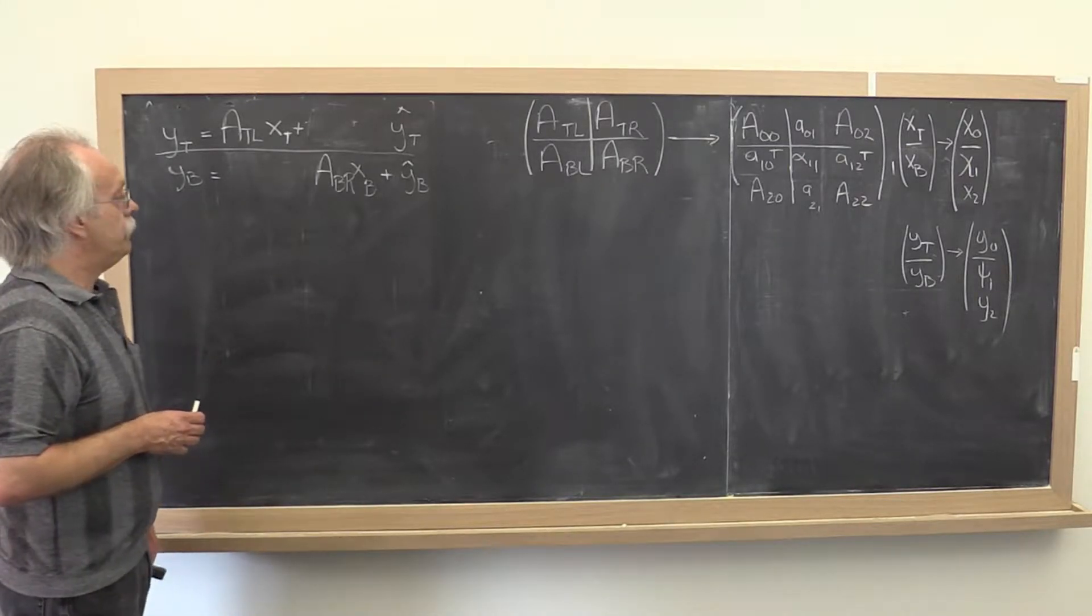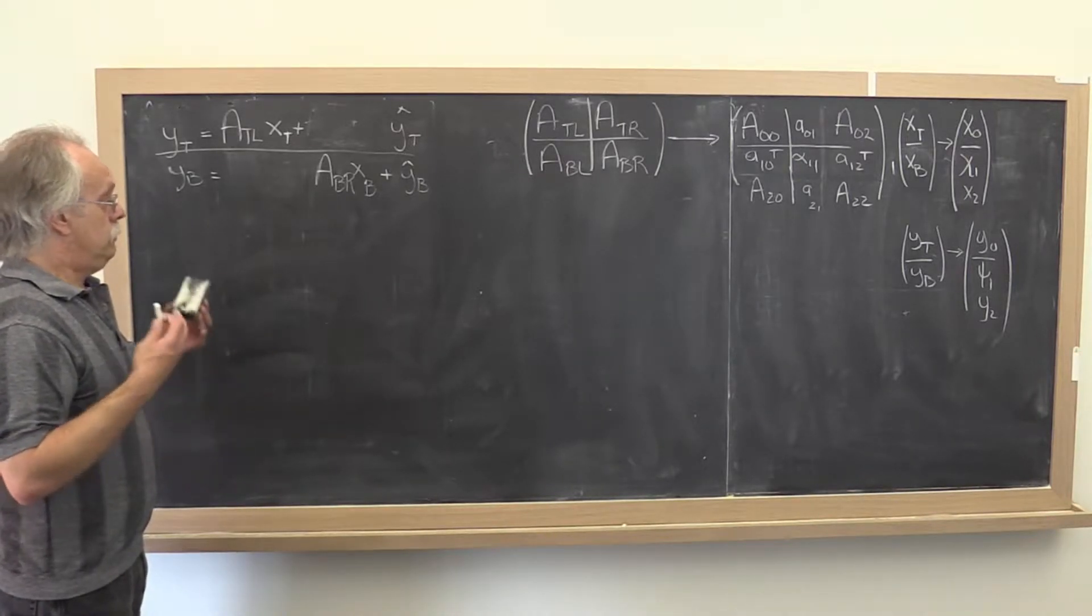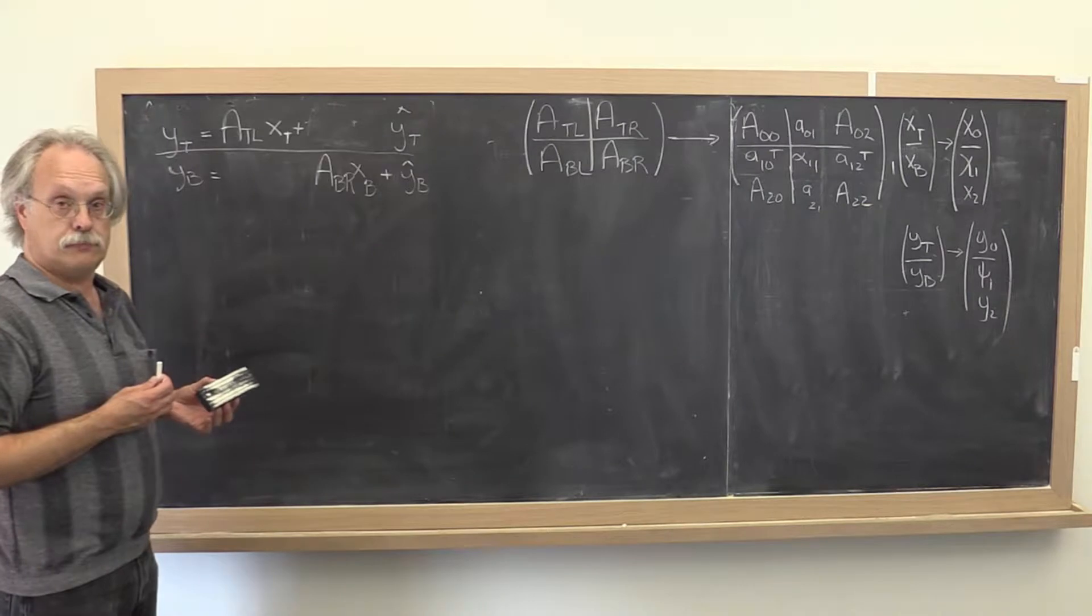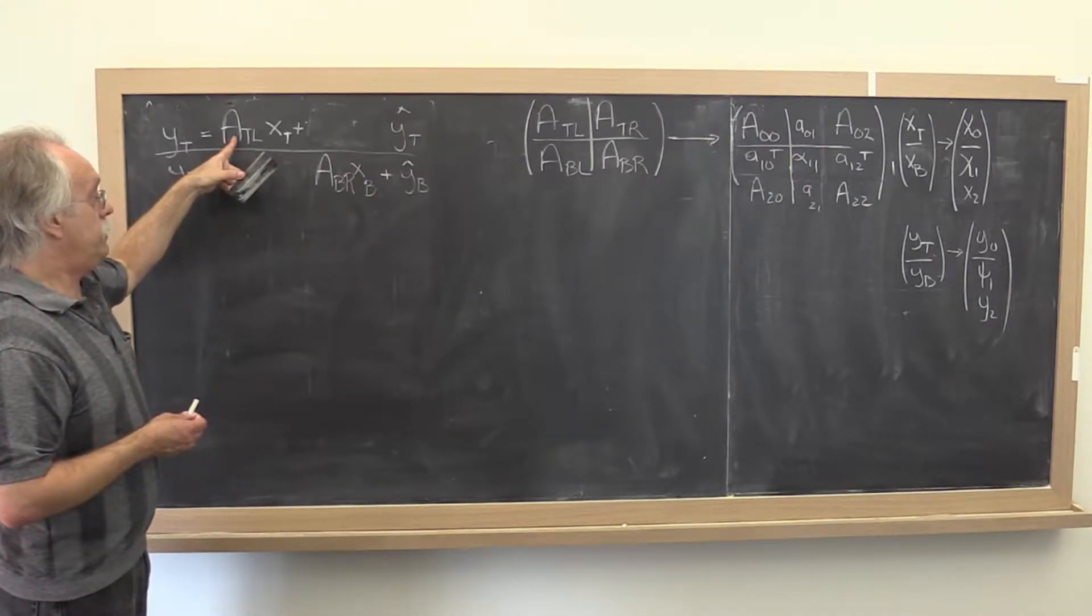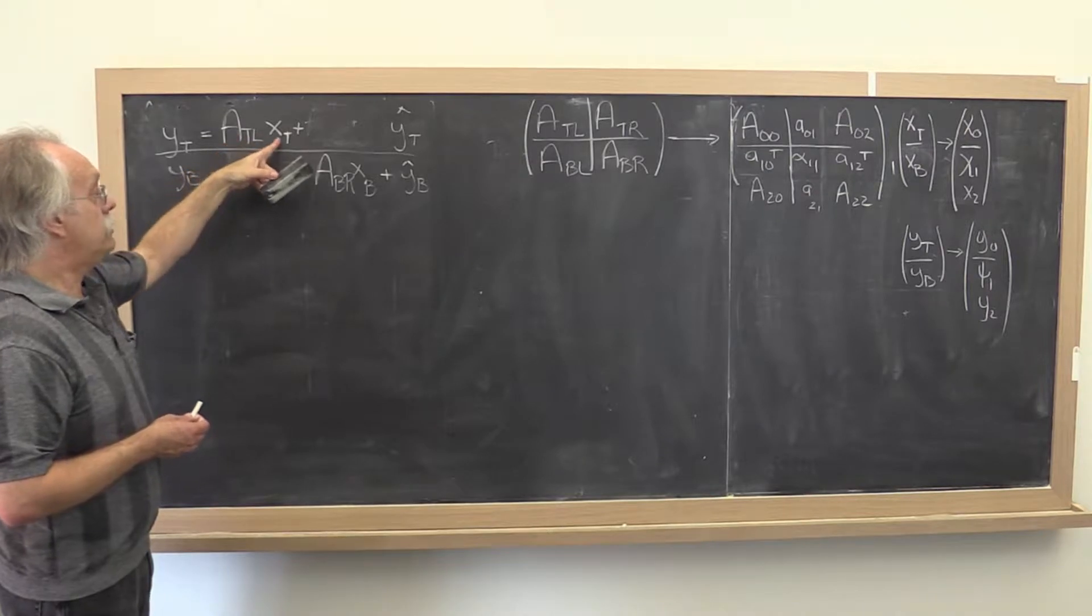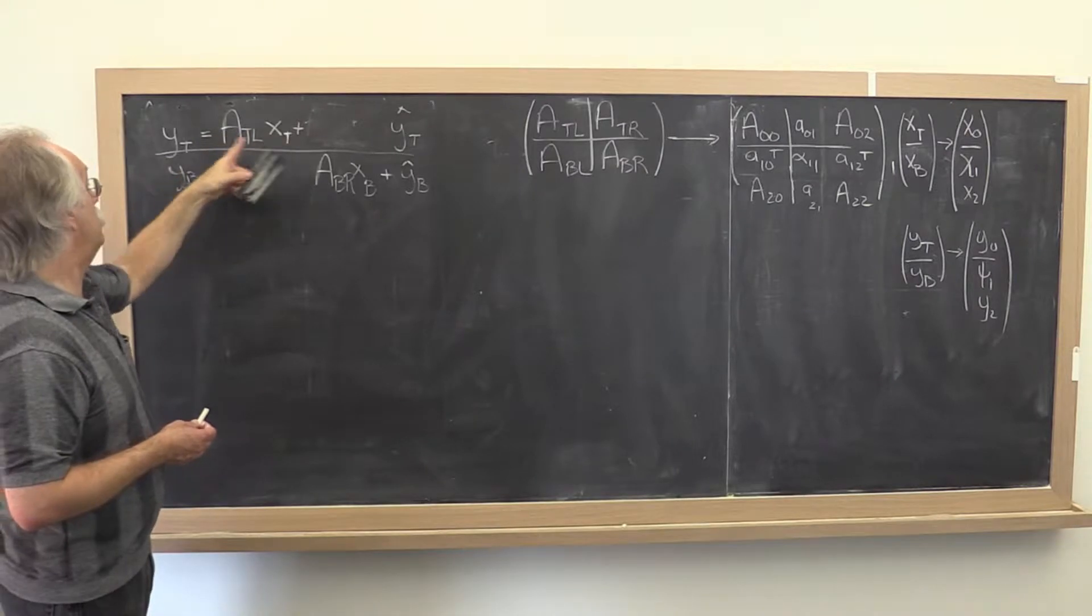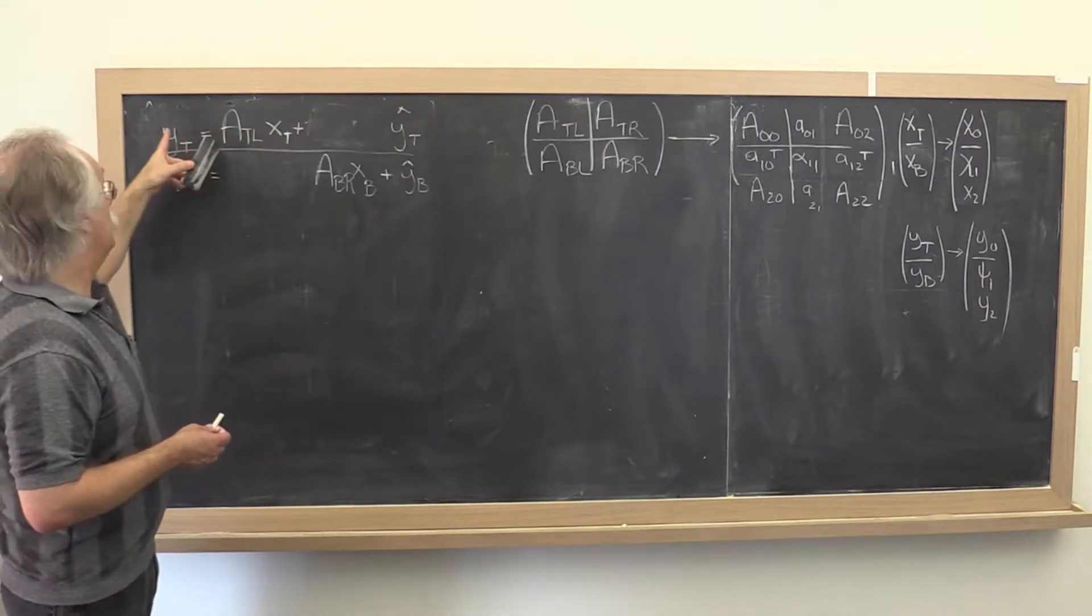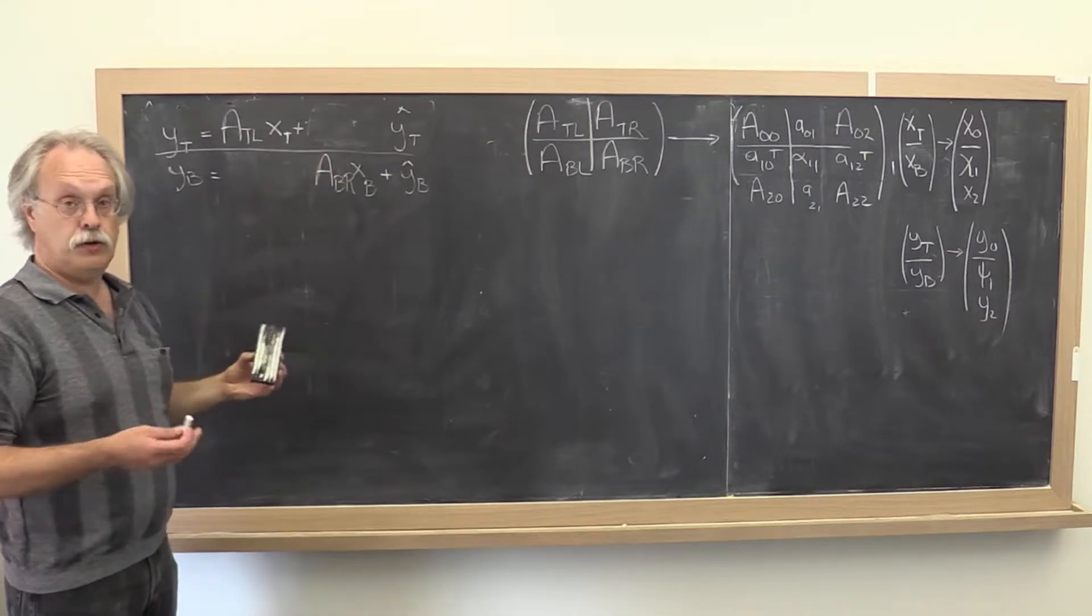You want to find the loop guard so that you're done, right? Notice that if a_top_left is all of a, then x_top is all of x. So this becomes a times x. And because sizes have to match, y_top is all of y. So you get y is equal to a times x plus y hat.